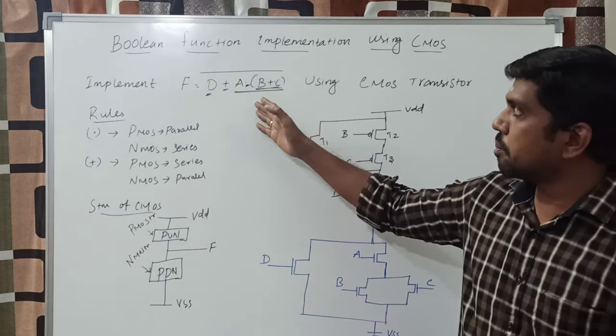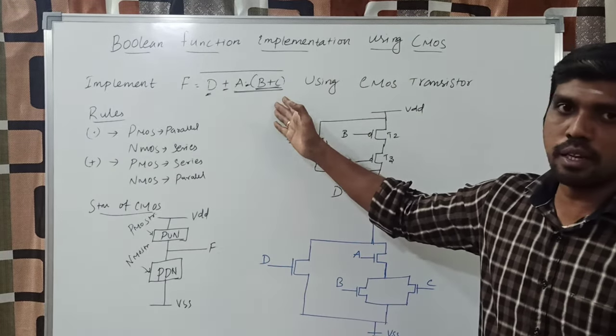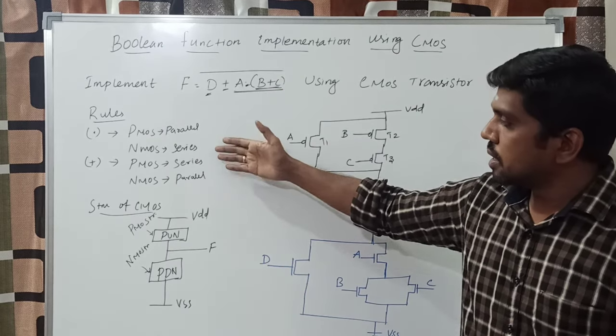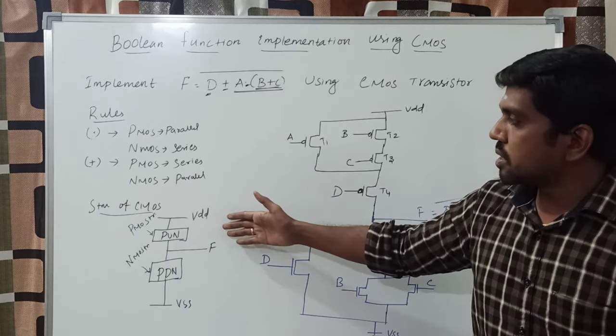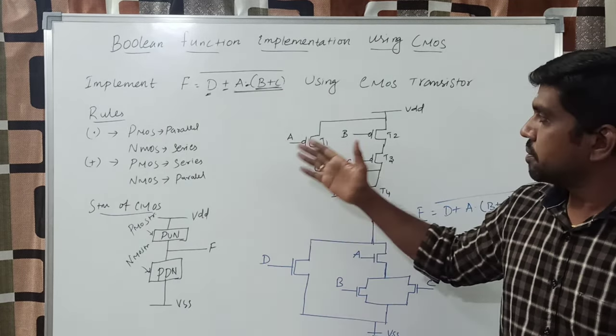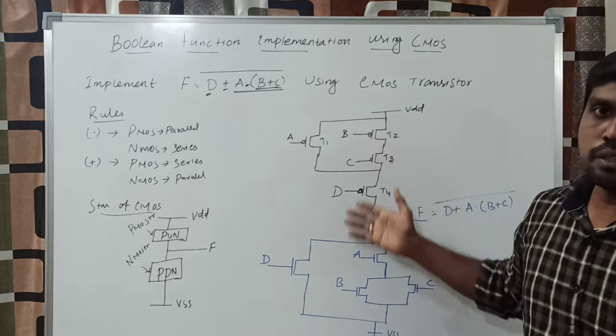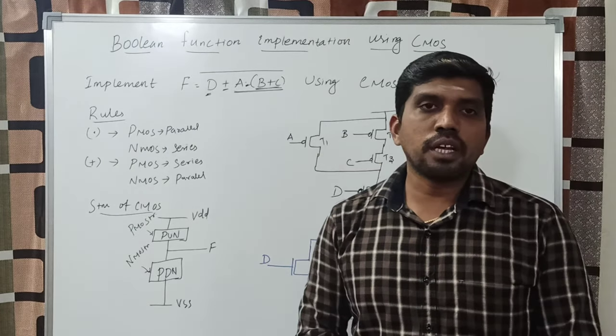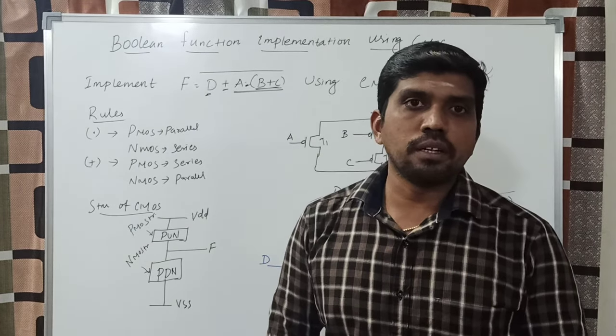It is the basic procedure to design a boolean function into CMOS transistor logic. First, read the problem clearly. Then write the rules. Know the CMOS structure, and based on the structure, frame the CMOS logic circuit. Thanks for watching my channel.